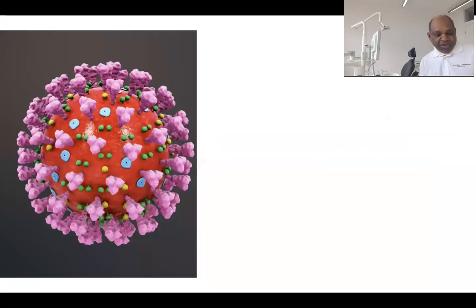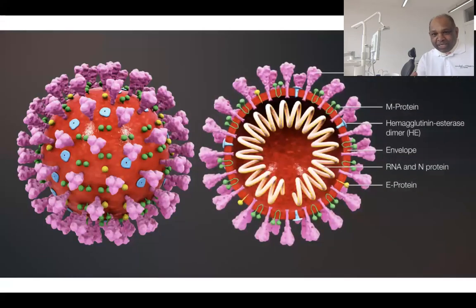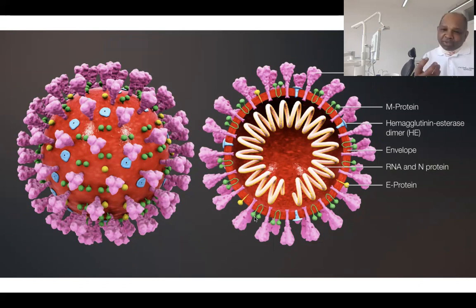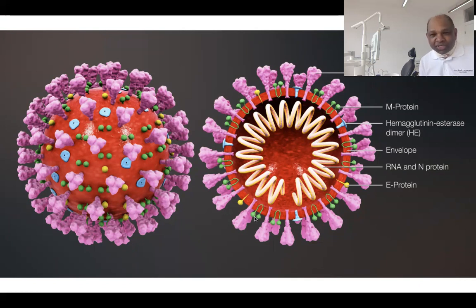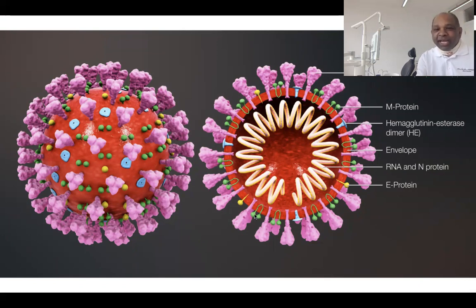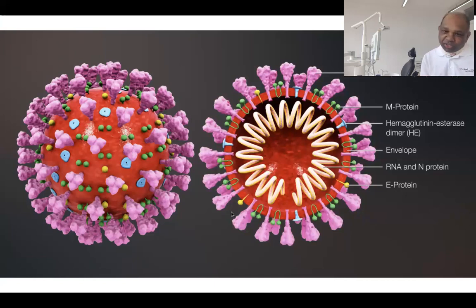The 3D modeling of this coronavirus shows again in cross section the RNA on one side surrounded by an envelope of a lipid layer. This lipid layer is quite important, mainly because we know that lipid layers are dissolved or broken down by soap solutions. That is why it's so important to wash your hands regularly, because the soap solution will actually dissolve this lipid layer and thereby destroy the virus.